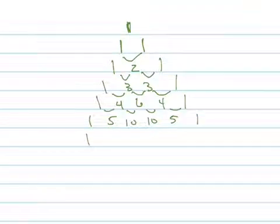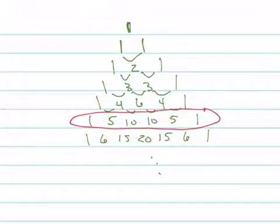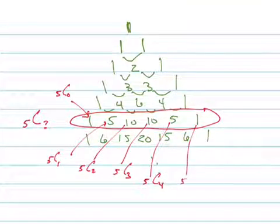Then 1, 6, 15, 20, 15, 6, 1, and so on. This entire row right here is the row that we need. This is your 5 choose row. That's 5 choose 0, this is 5 choose 1, this is 5 choose 2, this is 5 choose 3, this is 5 choose 4, and this is 5 choose 5.